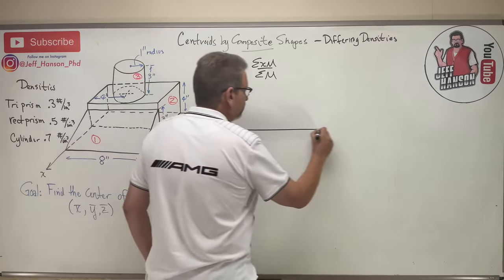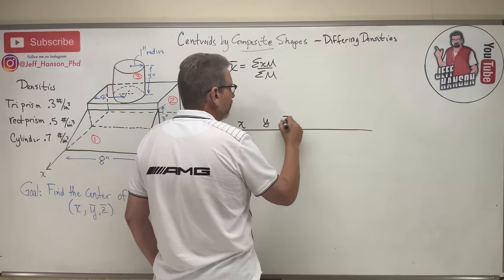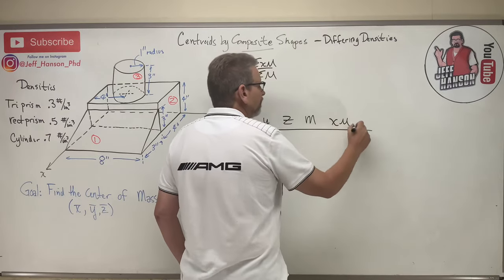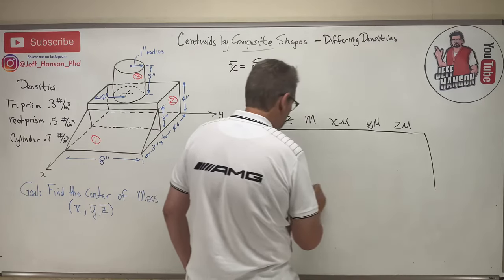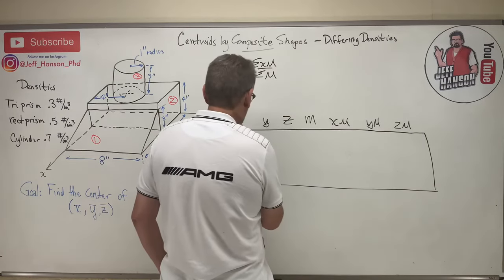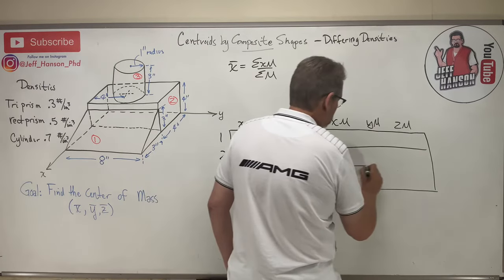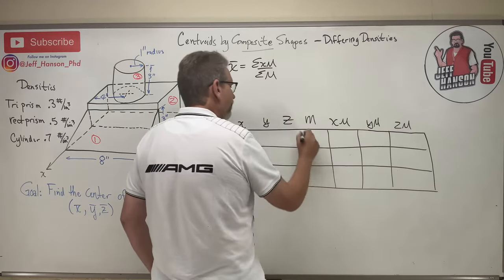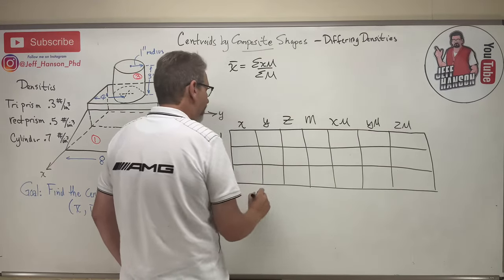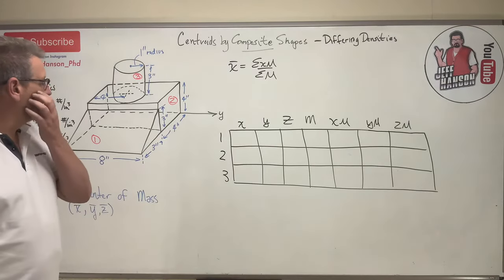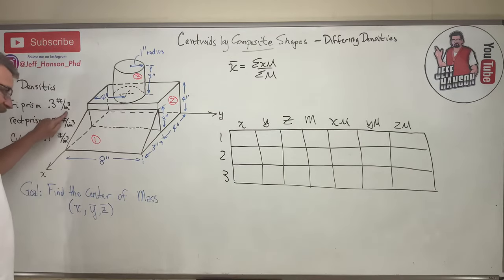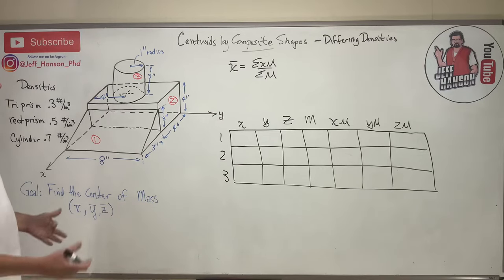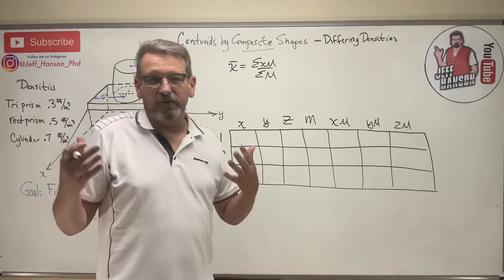I got x bar, y bar, z bar, m, x m, y m, and z m. Now we have to fill that up with the correct values. How do you find mass? Remember this is pounds per cubic inch, so that's the density. I've got to multiply that by the volume and then I'll have the amount of pounds, and pounds is going to be pounds mass.